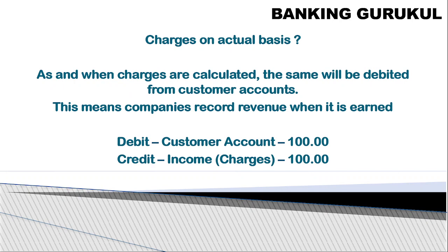On an actual basis, as and when charges are calculated, the same will be debited from the customer's account. For example, if I am issuing a debit card with charges of 350 rupees, at the time of issuing I'll debit the customer's account and credit my income. This is called charge on actual basis — the company records revenue when it is earned.